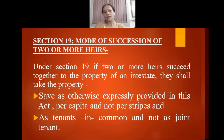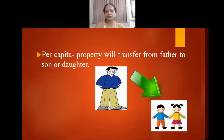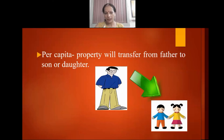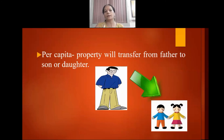Now let us see what we mean by the terms per capita and per stripe. Per capita means property is transferred from father to son or daughter. Such a transfer is called a per capita transfer.